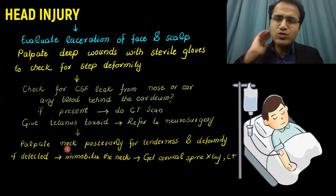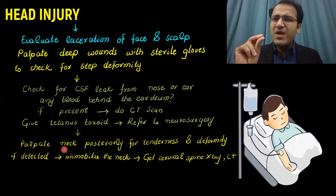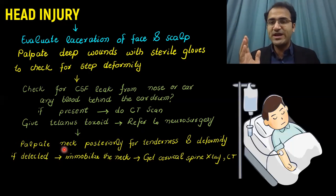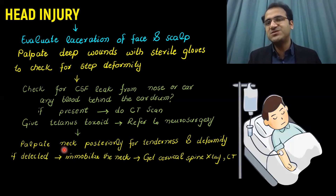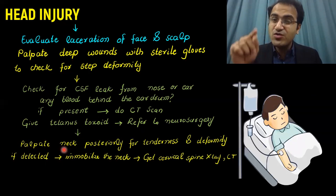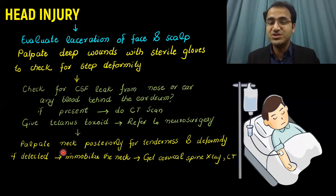Palpate the neck posteriorly for any tenderness or deformity. If tenderness or deformity is detected, immobilize the neck and order a cervical spine X-ray or CT. Cervical spine injury means that mobilizing the neck could injure the spinal cord and cause permanent neurological damage — so the cervical spine must be protected.